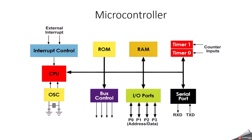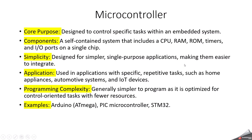Microcontrollers are designed to perform specific tasks and control functions in embedded systems. Common use cases include electronic devices like home appliances, automotive systems, industrial machinery, and consumer electronics. The difference is that a microcontroller is the heart of an embedded system, while a microprocessor is the heart of a computer system. Examples of microcontrollers include Arduino, PIC microcontroller, 8051, and STM32.